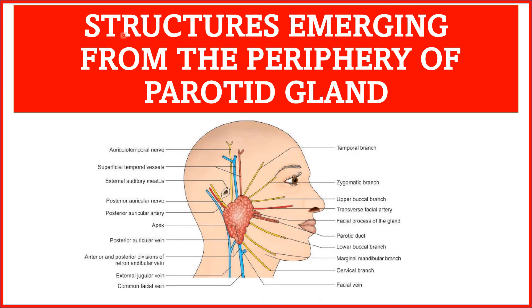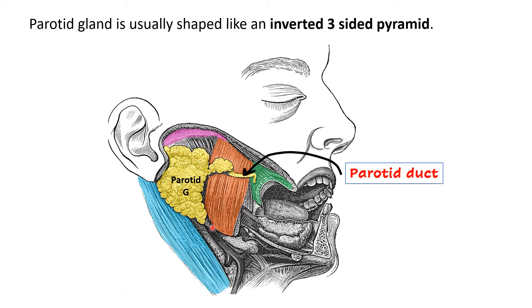This video is about the structures that emerge from the periphery of the parotid gland. Here we can see the parotid gland, this yellowish structure, present below and in front of the external ear. This is the parotid duct. Usually the shape of the parotid gland is like an inverted three-sided pyramid. I have considered the different borders and surfaces of the parotid gland in another video — I will put the link in the description box. Here we are going to look at those structures which emerge from the periphery.